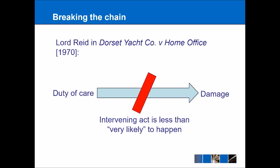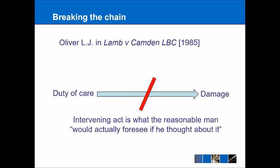This was an unsatisfactory test, so in Lamb v Camden London Borough Council, Lord Justice Oliver tried a different formulation. He said that an intervening act is what the reasonable man would actually foresee if he thought about it, aiming to make it a little easier for an intervening act to break the chain of causation. Lord Denning went on to say that we shouldn't be too reliant on any particular test — we could look to Lord Reid or Lord Justice Oliver as a starting point, but we have to be aware of various policy factors.